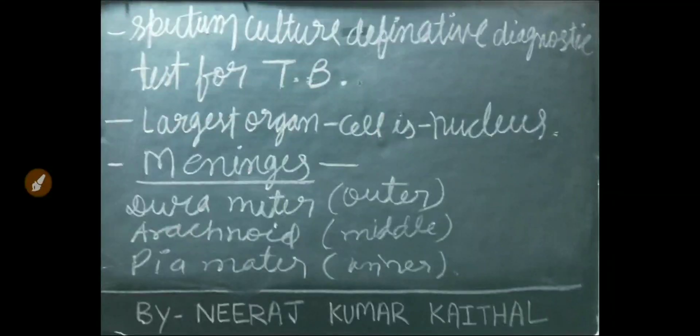Sputum culture is a definitive diagnostic test for TB. The largest organelle of the cell is the nucleus. There are total three meninges — the layers that cover the brain and spinal cord. The outer is dura mater, the middle is arachnoid, and the inner one is pia mater.